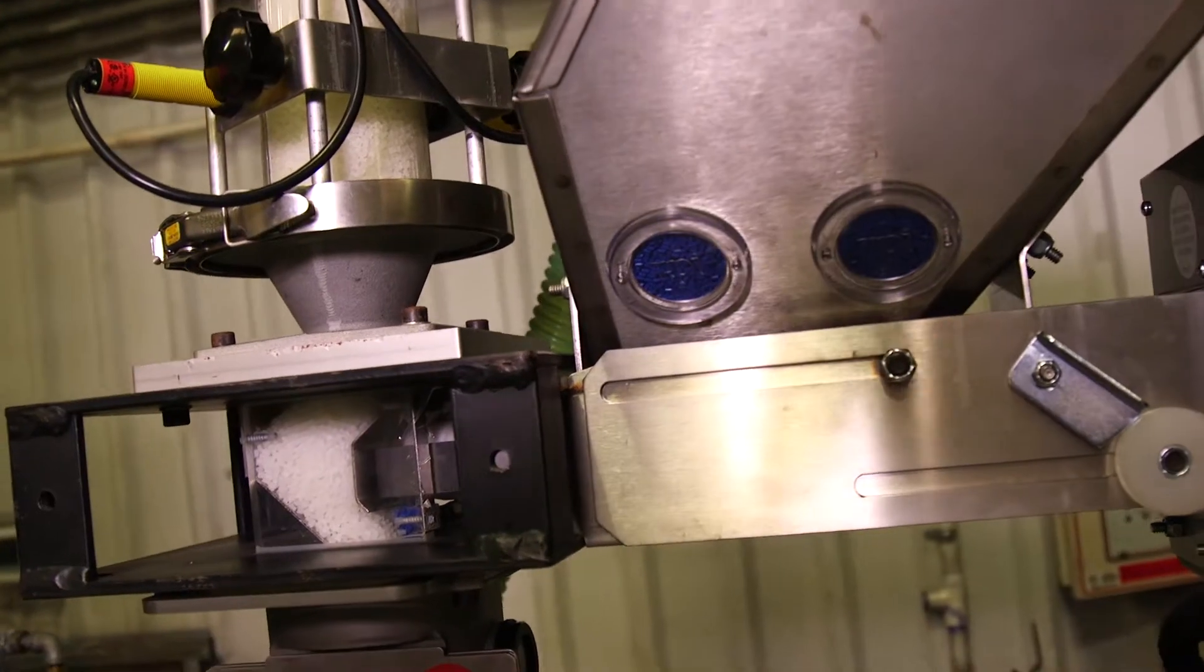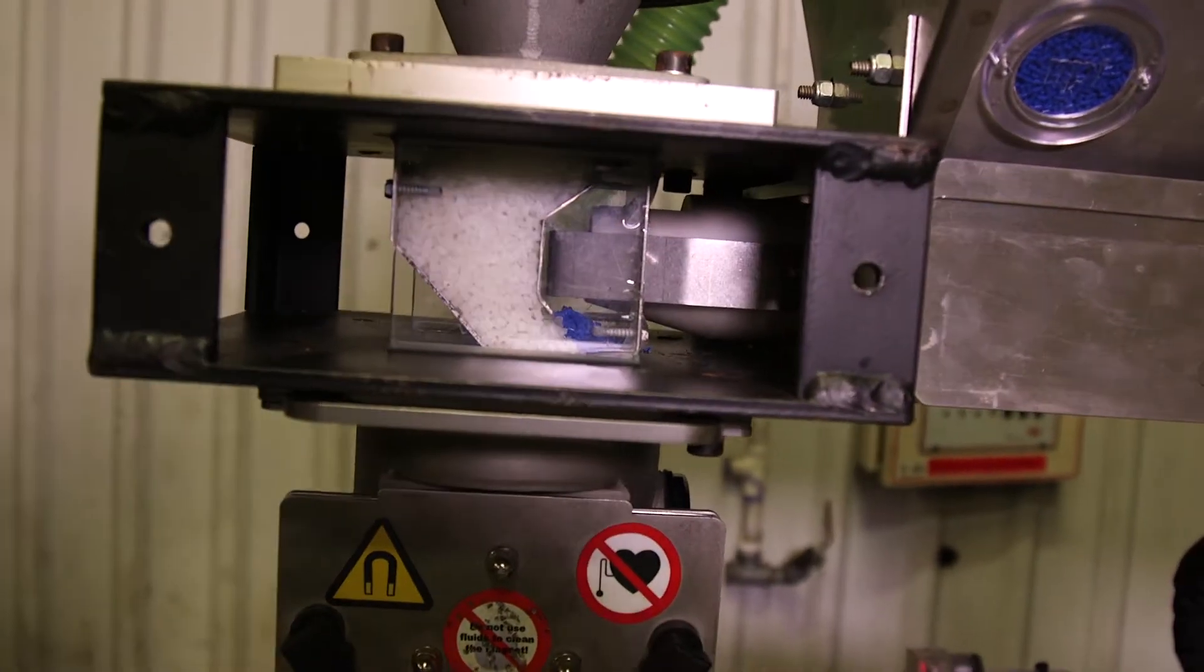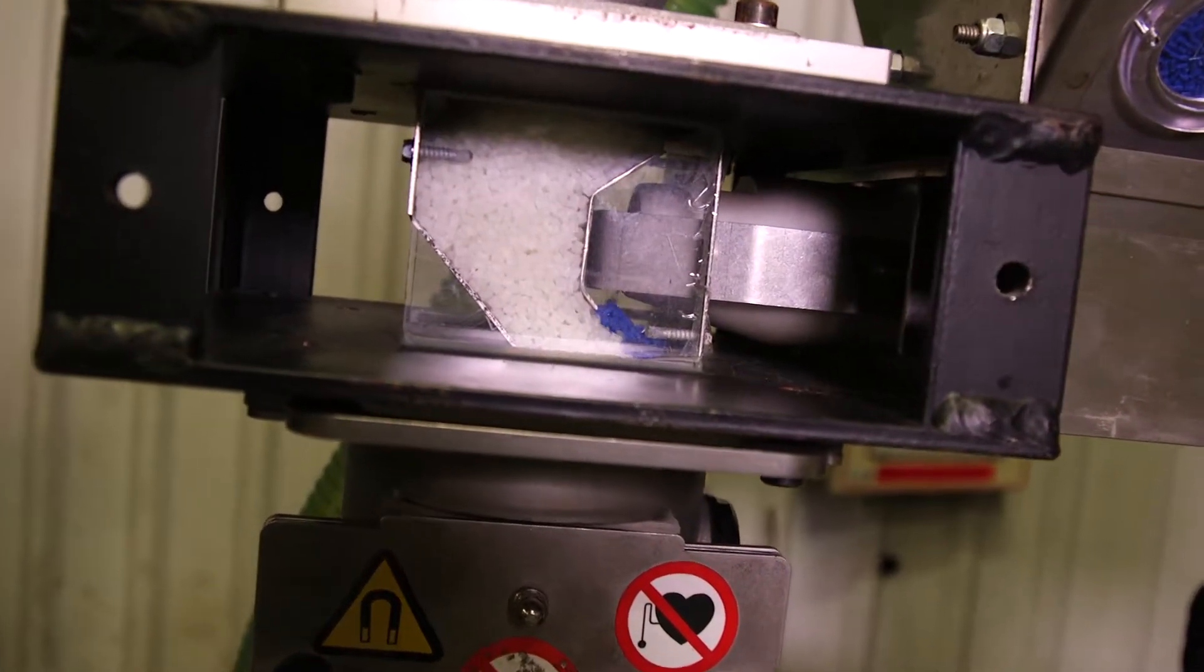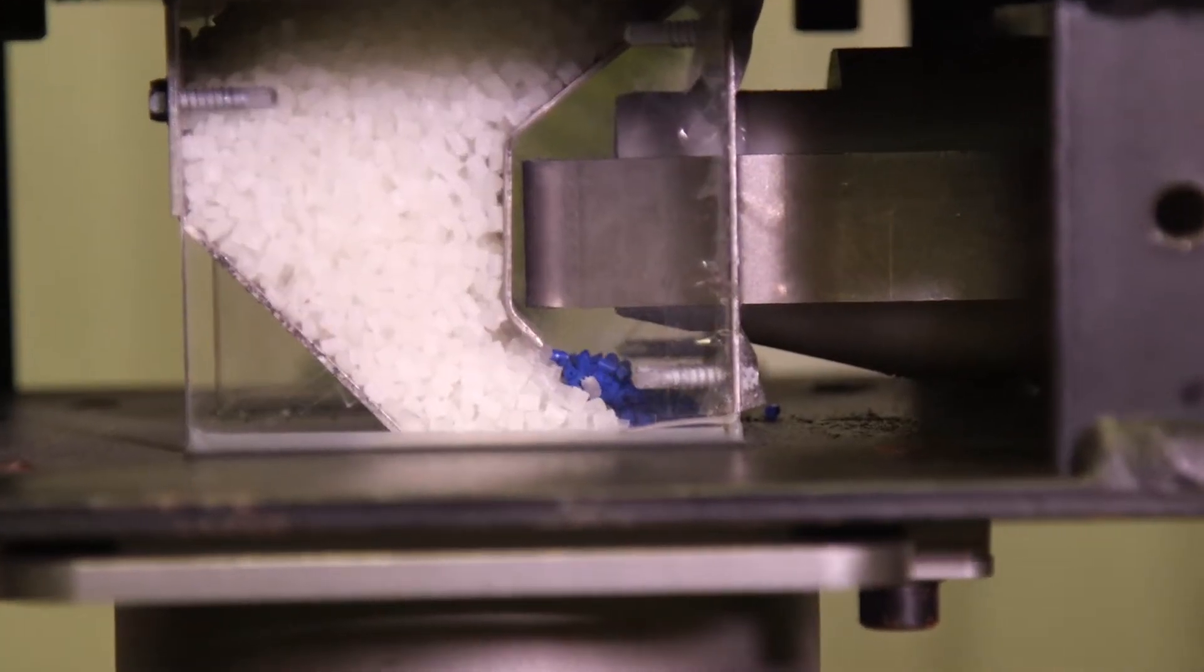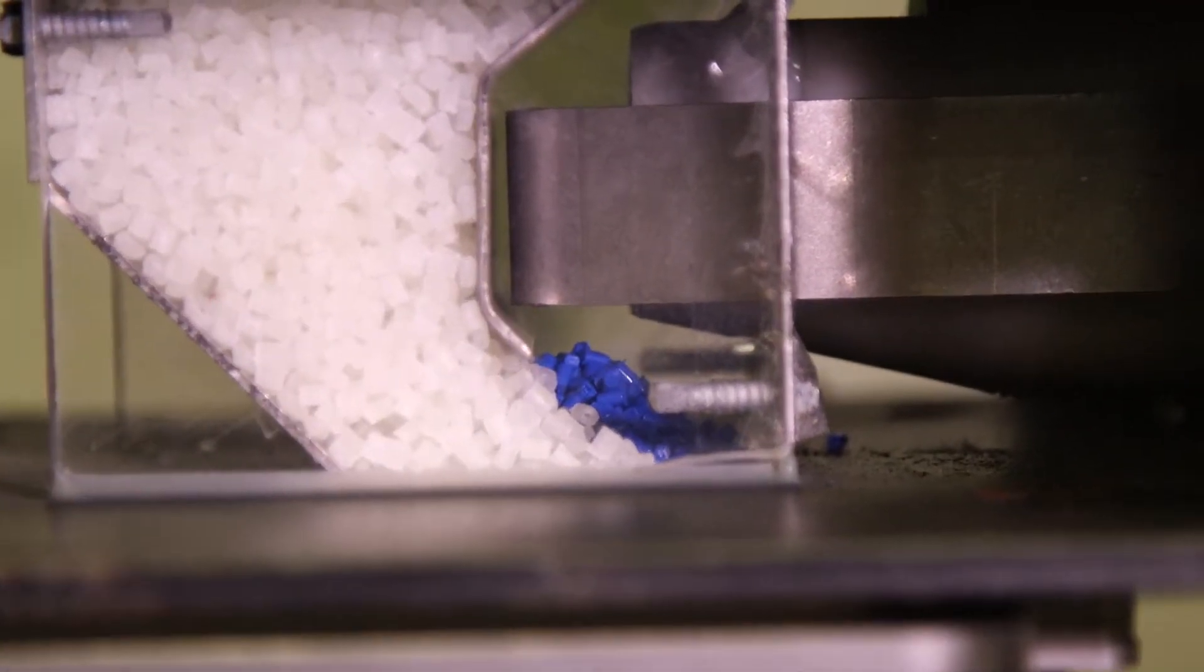Coloring and blending of materials can be automated at the point of entry to the feed throat of the machine through additive feeders. These additive feeders continuously and repeatedly add the precise amount of color or additive to the material.